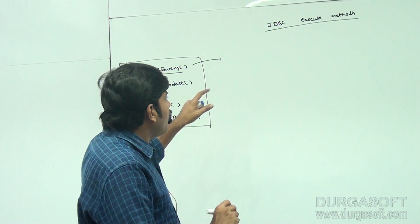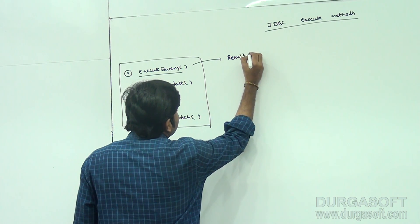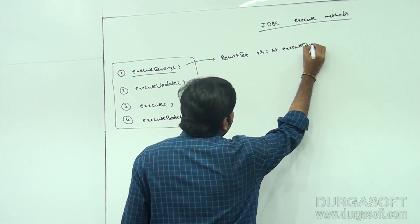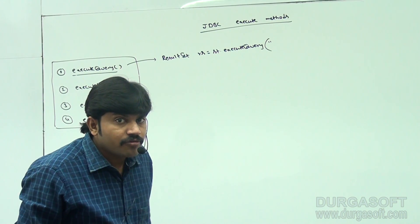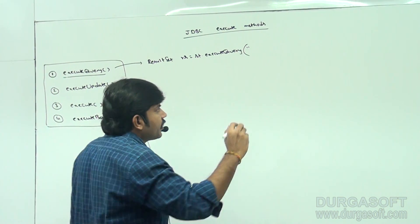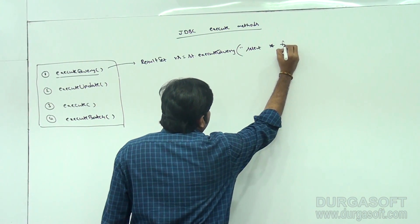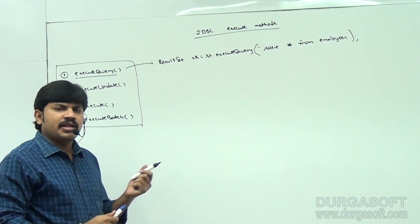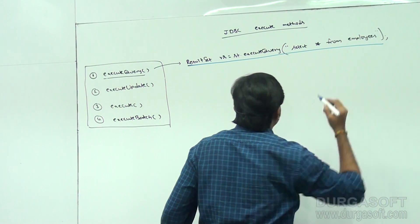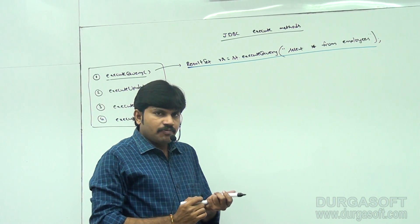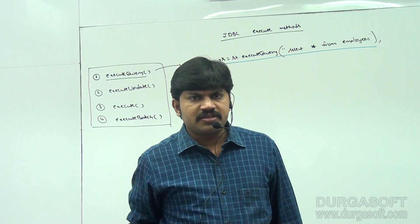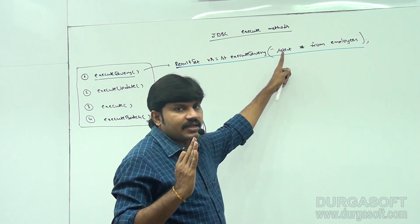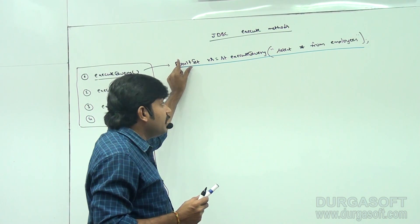The return type of the executeQuery method is ResultSet. The syntax is: ResultSet rs = st.executeQuery("SELECT * FROM employees"). By using executeQuery, we can execute SELECT queries. So the first method, executeQuery, is applicable only for SELECT operations, and its return type is ResultSet, which represents the group of records.